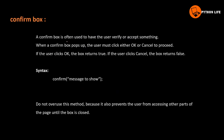A confirm box is often used to have the user verify or accept something. When a confirm box pops up, the user must click either OK or Cancel to proceed. If the user clicks OK, the box returns true. If the user clicks Cancel, the box returns false.